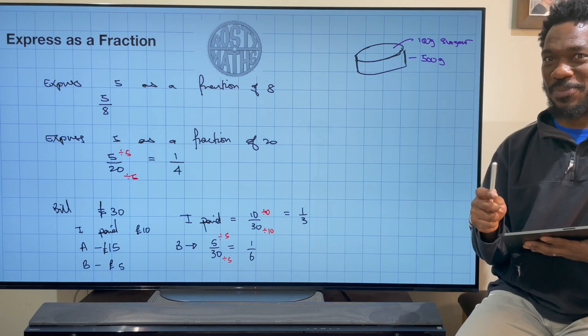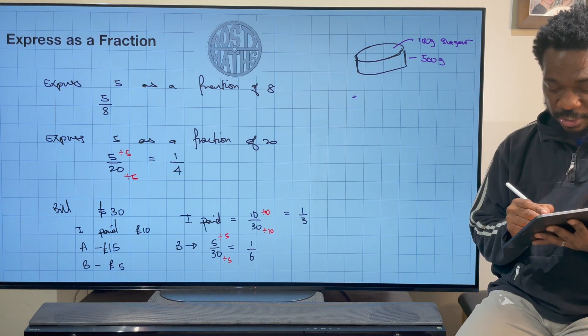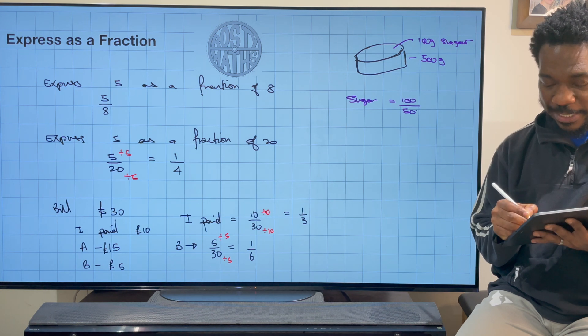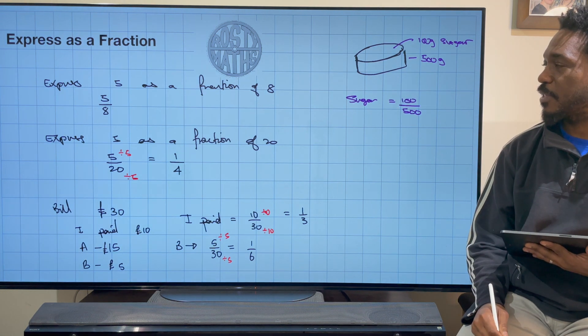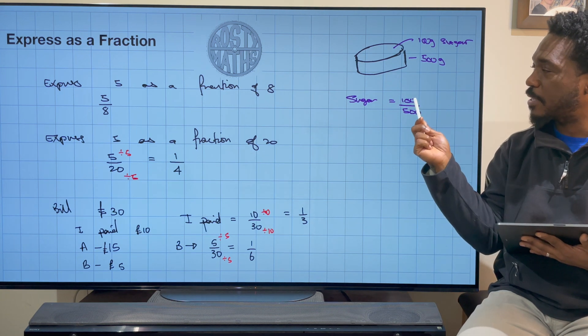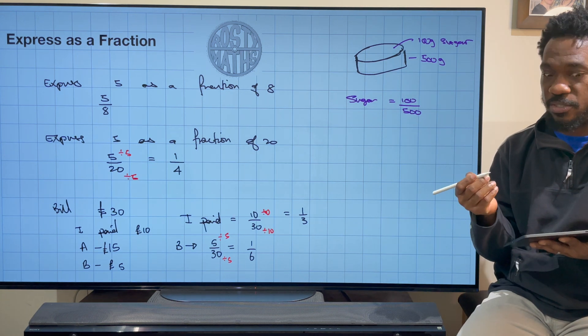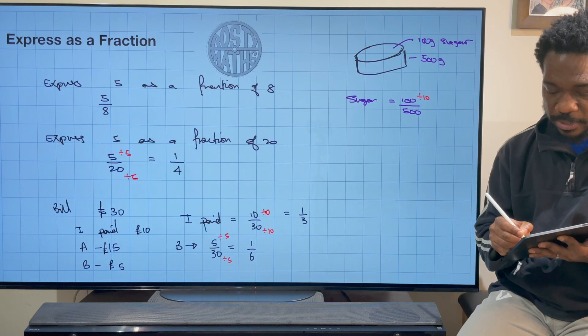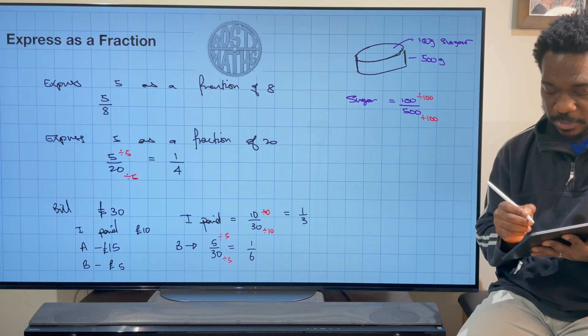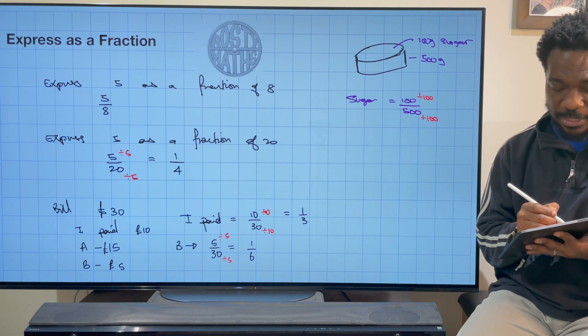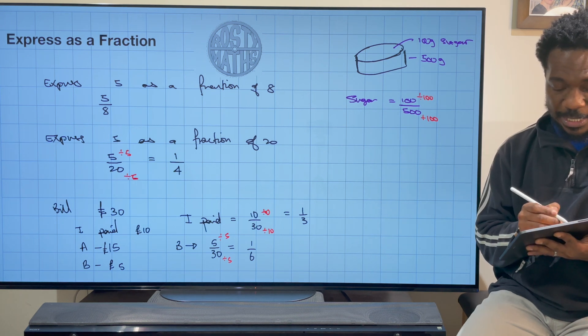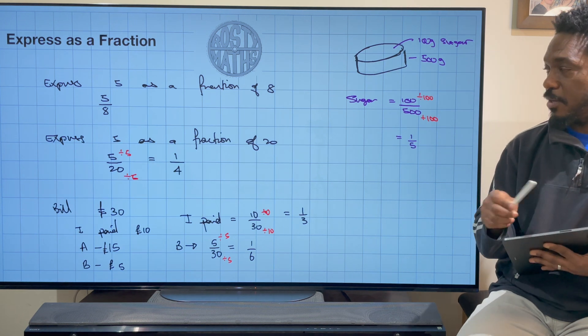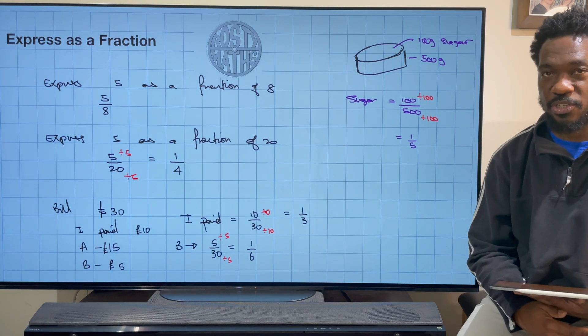So the sugar is going to be 100 grams out of the whole size of the cake, 500 grams. Well, the highest common factor between 100 and 500 is 100, so I'm going to divide by 100 at the top, divide by 100 at the bottom, or the numerator and denominator respectively.